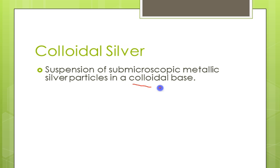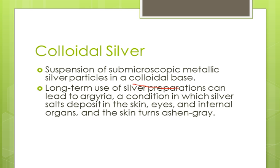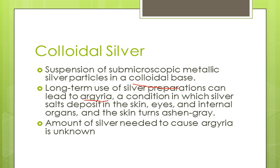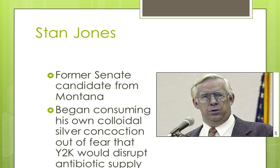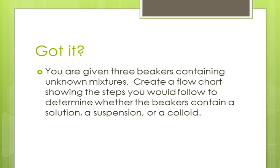As an aside, colloidal silver is a colloidal base of microscopic tiny silver particles in a colloid setting. In the 90s especially, using silver preparations as a home health product became quite popular. But if you use a lot of these, it can lead to argyria — a condition where silver salts deposit in your skin and turn it a bluish-gray color. The discoloration is permanent. Stan Jones, a politician from Montana who ran for the Senate, was making a colloidal silver mixture out of fear that the Y2K computer changes would disrupt the antibiotic supply — and he actually turned himself blue while running for office. Maybe not the wisest move.